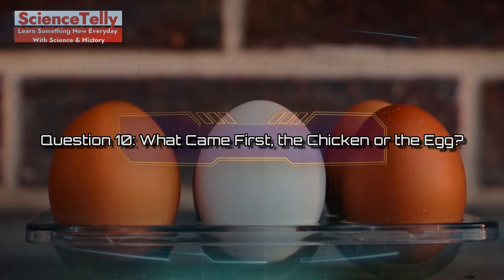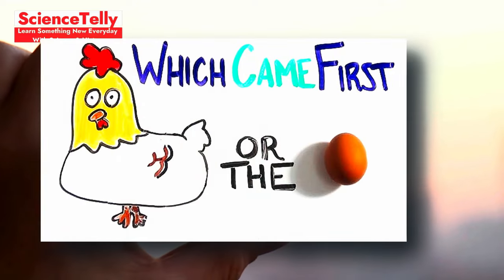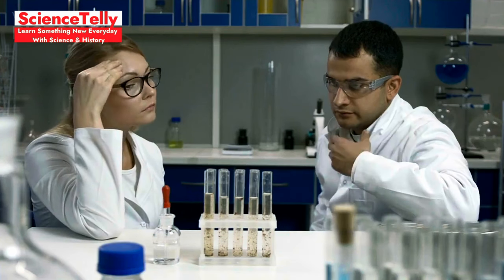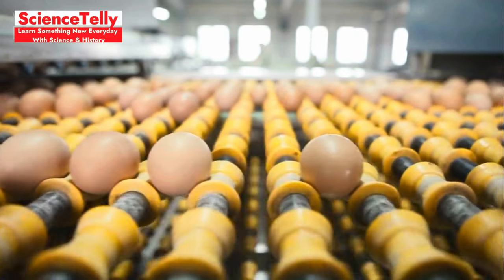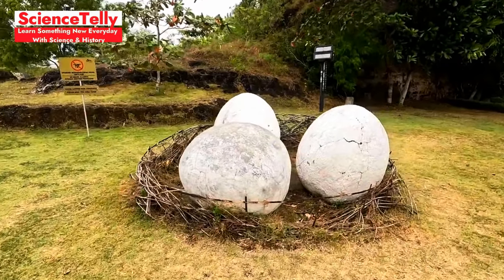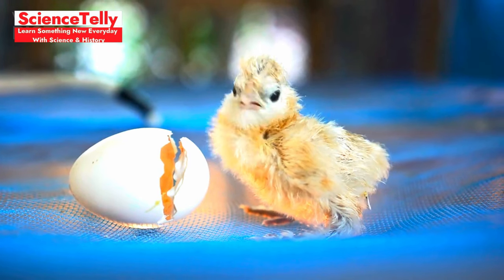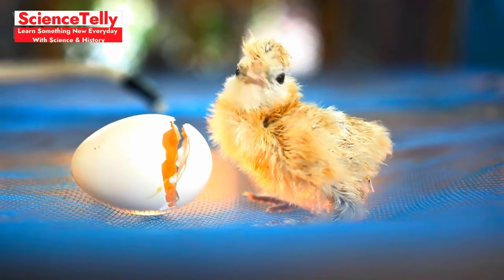Question 10. What came first, the chicken or the egg? Let's tackle the classic question. Science has a pretty good answer for this one. According to evolutionary biology, the egg likely came first. Before chickens existed, their evolutionary ancestors were laying eggs. Over time, genetic mutations and adaptations led to the development of what we now recognize as a chicken.